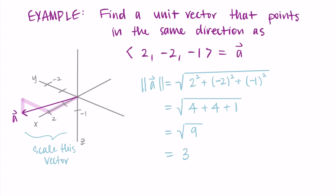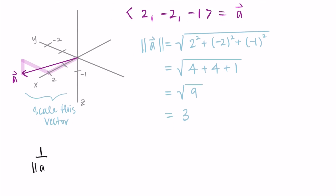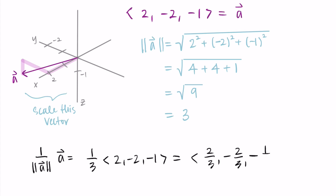The length of vector a is 3 and I want it to have a length of 1. So I do (1/3) times the vector ⟨2, −2, −1⟩, dividing each component by the magnitude. My new vector is ⟨2/3, −2/3, −1/3⟩, and this vector should point in the same direction but have a length of 1 — we've just shortened the vector to the proper length.